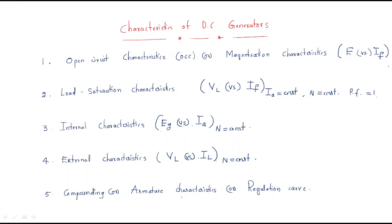The last characteristic is the compounding, or armature characteristics, also called the regulation curve — all are the same. This is a graph of field current versus armature current, where voltage is maintained constant and speed is maintained constant.